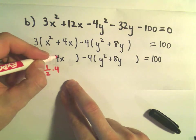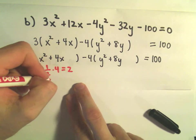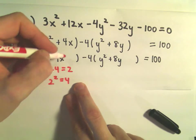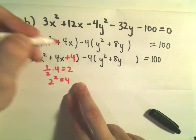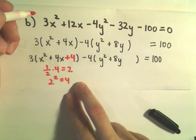I'm going to take 1 half of 4. That will give me 2. I take 2 and square it. That gives me positive 4. So I'm going to throw a plus 4 inside of the first set of parentheses.